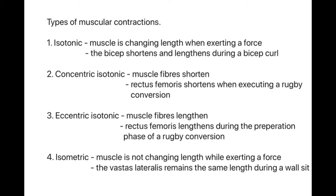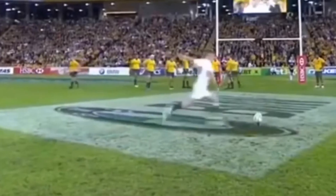The first sub-area of the isotonic contraction is the concentric isotonic. This is where the muscle fibre shortens when exerting a force. For example, the rectus femoris in the quadricep group is shortening to extend the knee when executing a rugby conversion. The other part is the eccentric isotonic - where the muscle fibre is lengthening. The rectus femoris is lengthening during the preparation phase of a rugby conversion where the knee flexes.